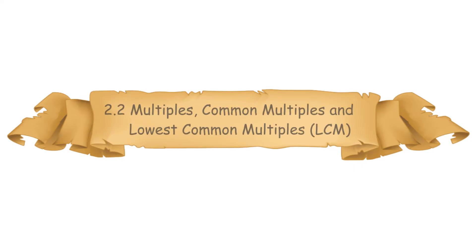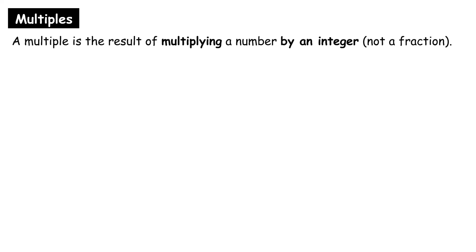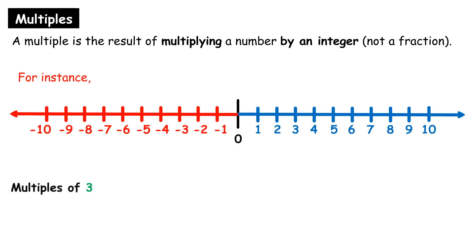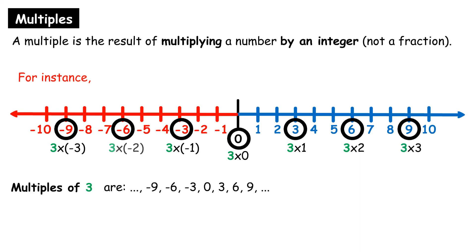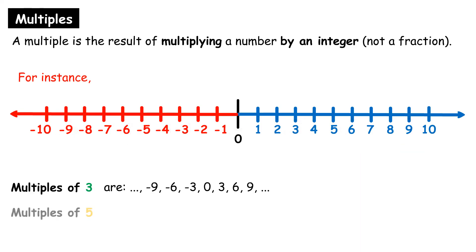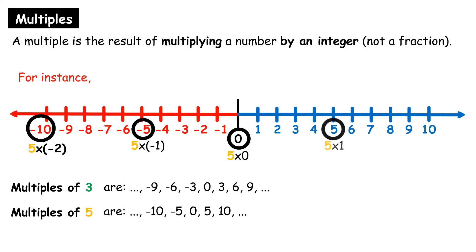2.2 Multiples, Common Multiples and Lowest Common Multiple (LCM). A multiple is the result of multiplying a number by an integer, not a fraction. For instance, multiples of 3 are: …−9, −6, −3, 0, 3, 6, 9. Multiples of 5 are: …−10, −5, 0, 5, 10.